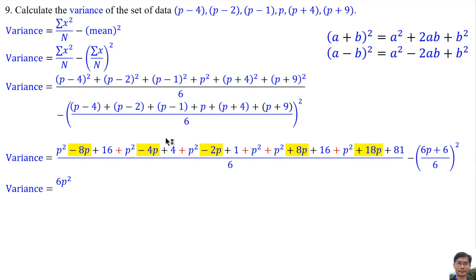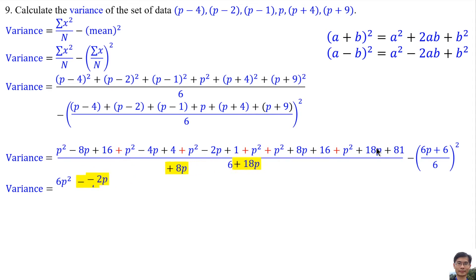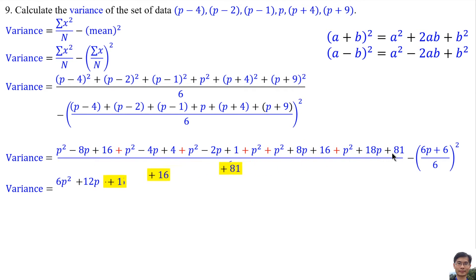Negative 8P minus 4P minus 2P plus 8P plus 18P equals positive 12P. And 16 plus 4 plus 1 plus 16 plus 81 equals 118.